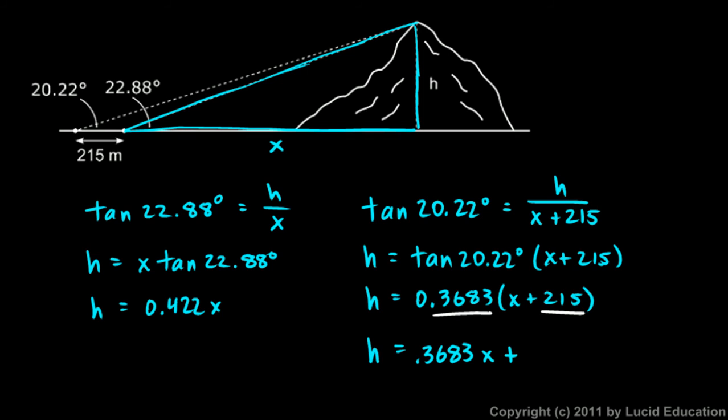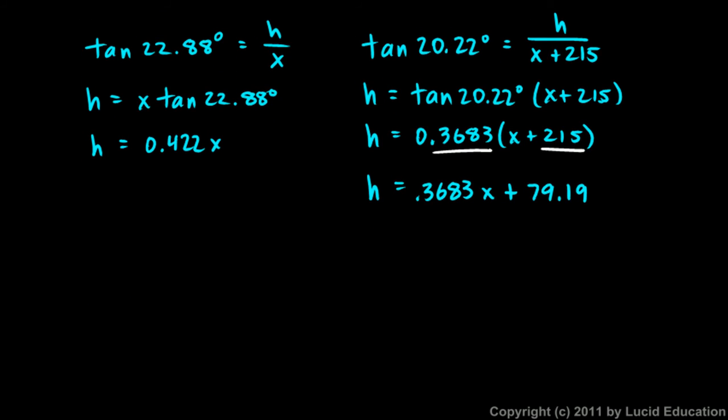If h is equal to this and h is equal to that, then this has to equal that. So I'll write that down: 0.422x has to equal 0.3683x plus 79.19. Then I'll subtract 0.3683x from each side on each side.